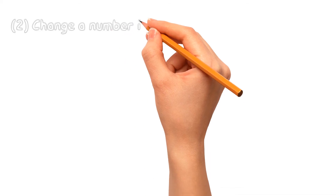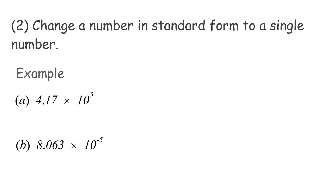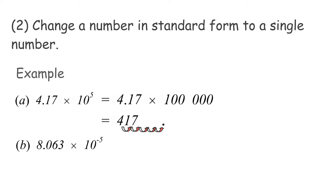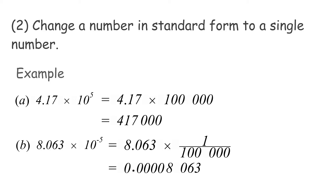Second: change a number in standard form to a single number. Example A: 4.17 × 10^5 = 4.17 × 100,000. Since 100,000 has 5 zeros, move the decimal point 5 places to the right and fill the spaces with zeros. Therefore, the answer is 417,000. Example B: 8.063 × 10^(−5) = 8.063 × (1/100,000). Since it is 1/100,000, move the decimal point 5 places to the left. Put a zero before the new decimal point and fill spaces after it with zeros. Therefore, the answer is 0.000008063.